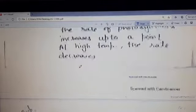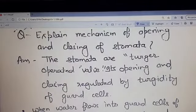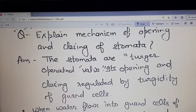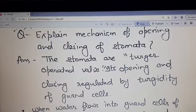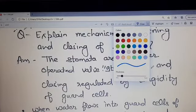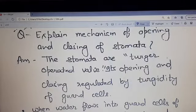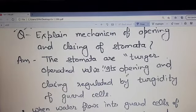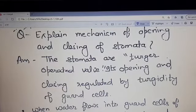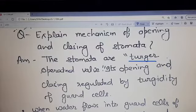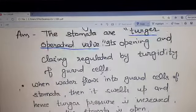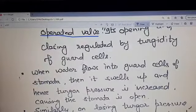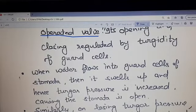The next topic is explain the mechanism of the opening and closing of the stomata. This is an important topic in this question, 2-3 marks. The stomata are the turgor operated valve. Its opening and closing is regulated by the turgidity of the guard cells.